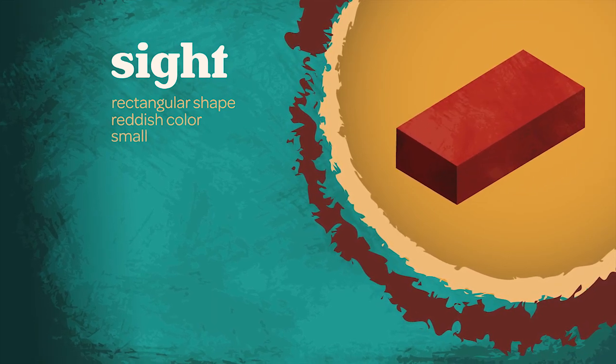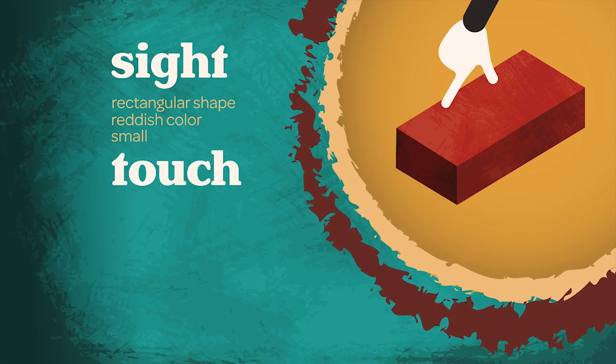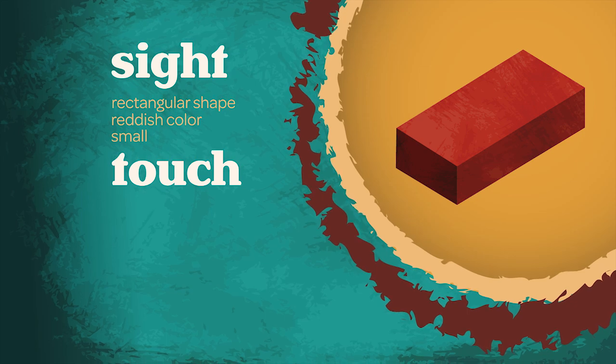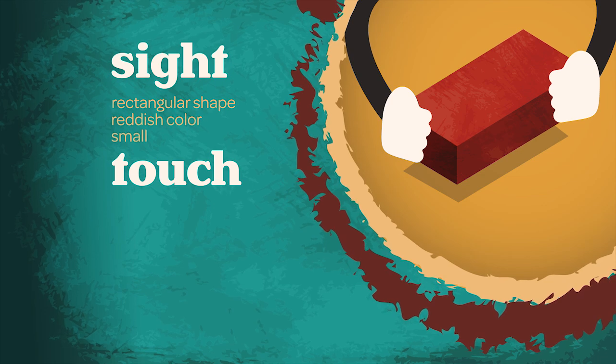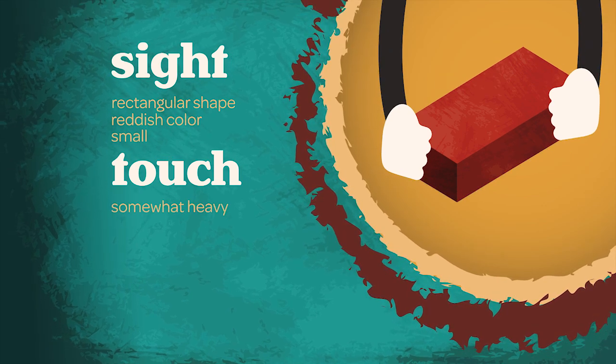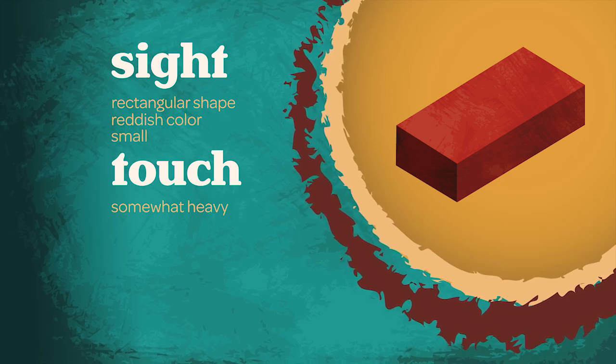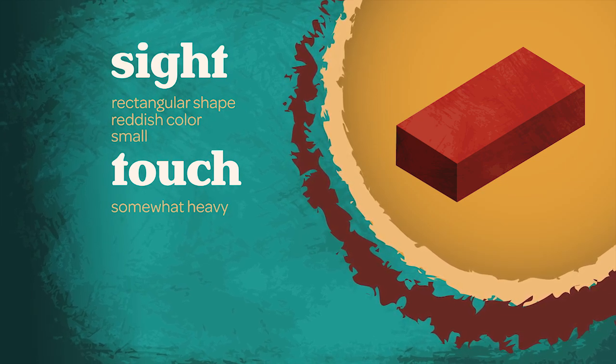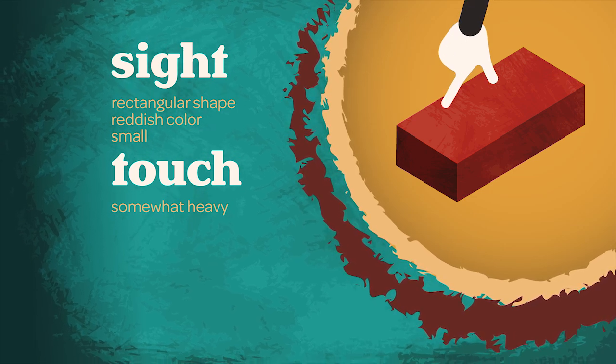You can use your sense of touch to help you observe the object's texture and weight. This object is light enough to pick up but it would feel rather heavy in your hands. Texture is how the surface of an object feels. The surface of this object feels rough.